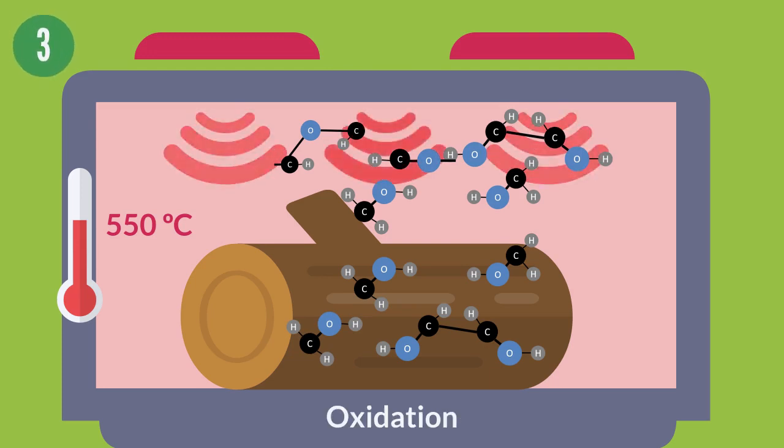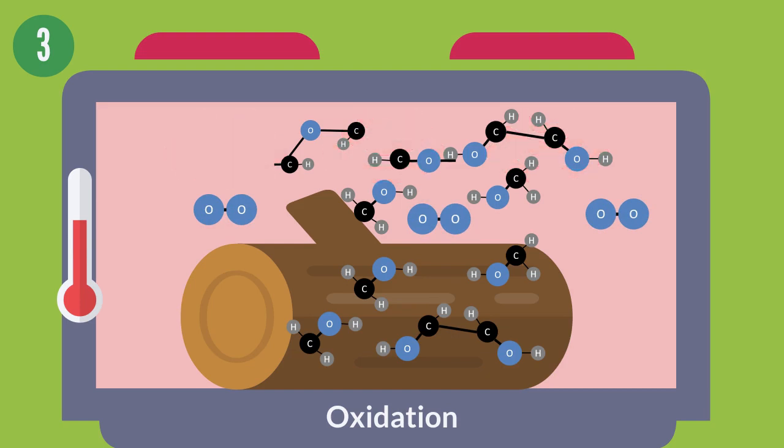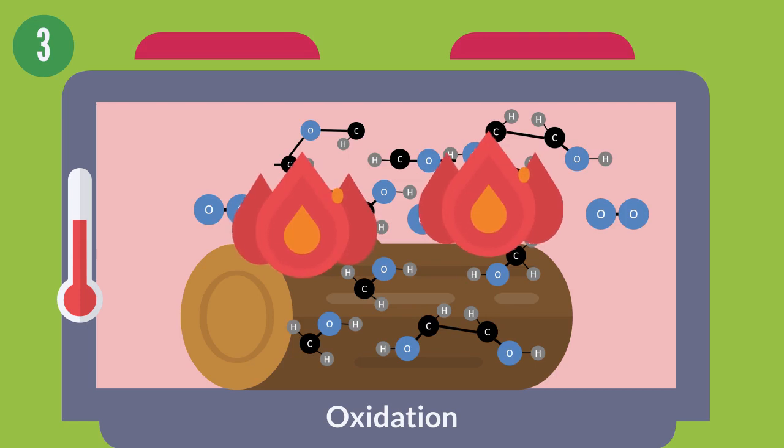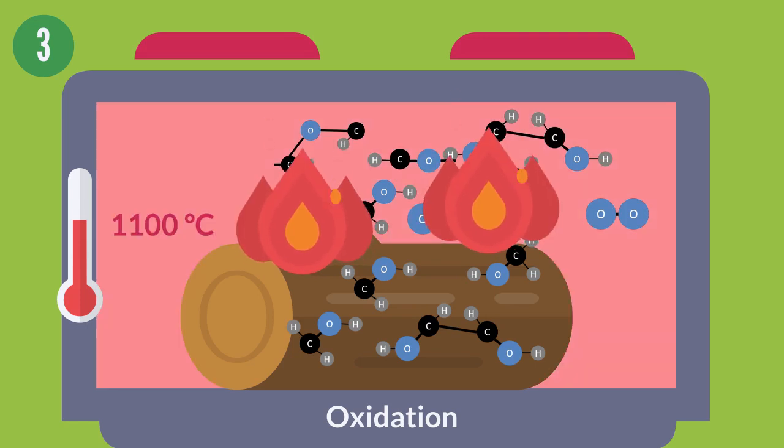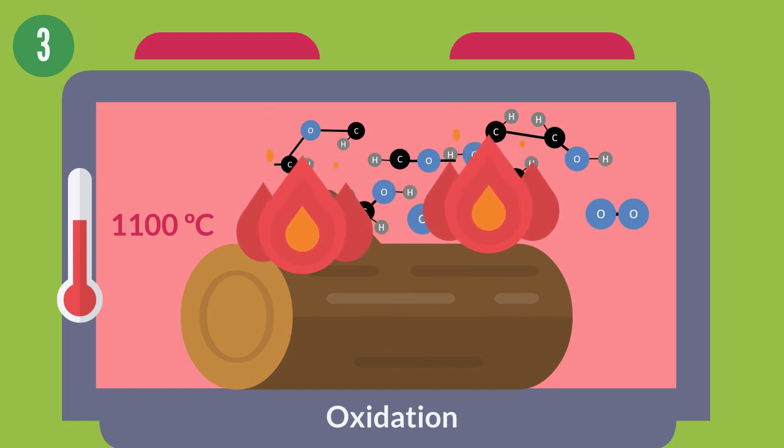Oxidation. When these vapors mix at high temperature with the oxygen from the air, they burn and produce heat and light. This happens between 550 and 1100 degrees. The heat released is what sustains the flame of the fire, for the fire propagation.